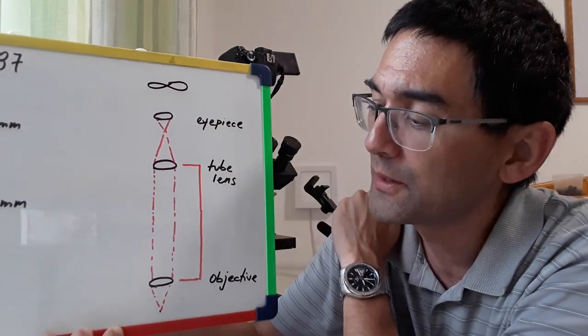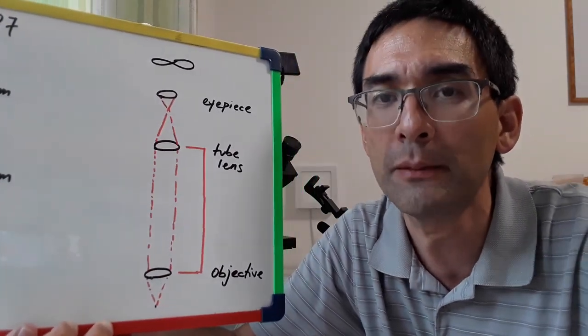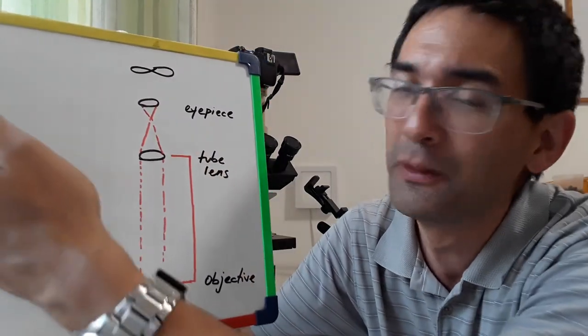And this one is actually now responsible for focusing the light to a point so that it's projected here and then the eyepiece can pick it up just as normally. So the disadvantage now is with those infinity objectives is that they're not compatible between different manufacturers and of course they're also not compatible with microscopes that do not have a tube lens.